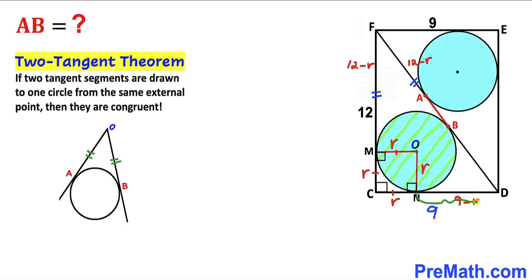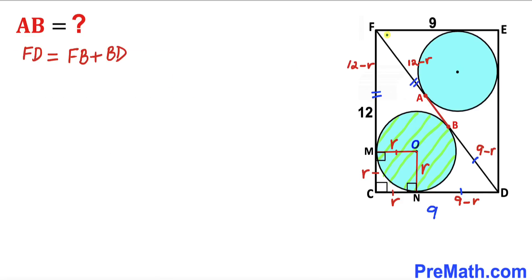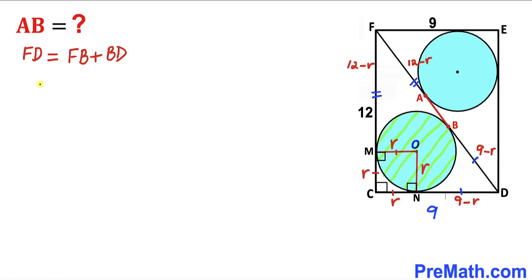Likewise, tangent ND is congruent to tangent BD, so BD is also 9 minus r. The whole diagonal FD equals the sum of tangents FB and BD, so FD equals (12 minus r) plus (9 minus r), which gives FD equals 21 minus 2r.